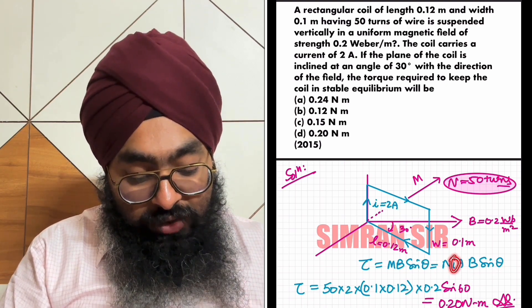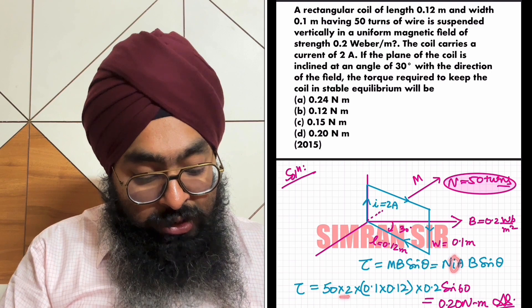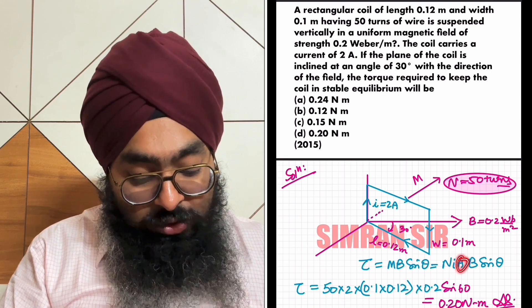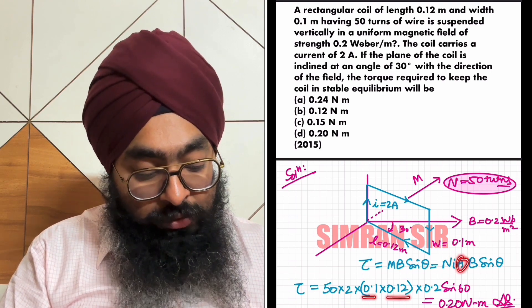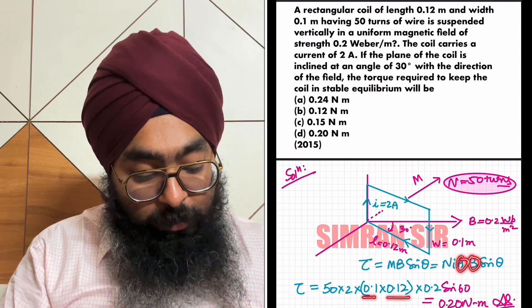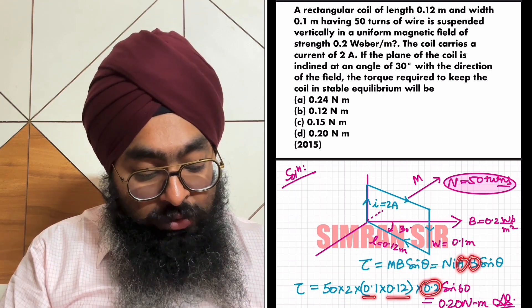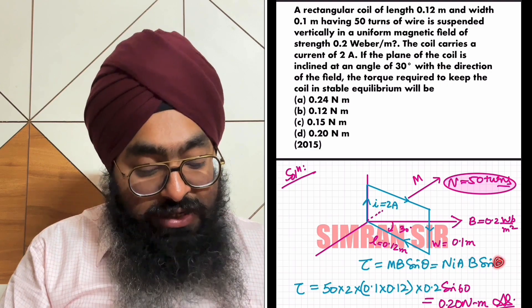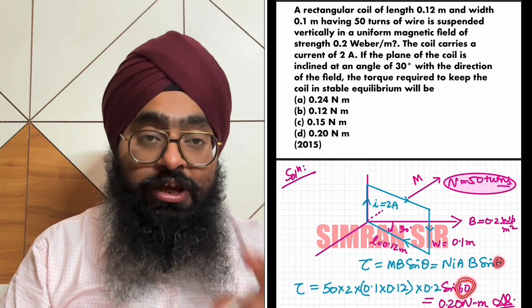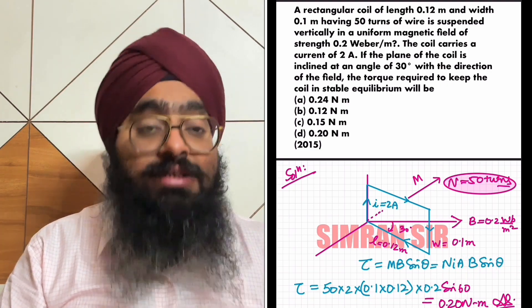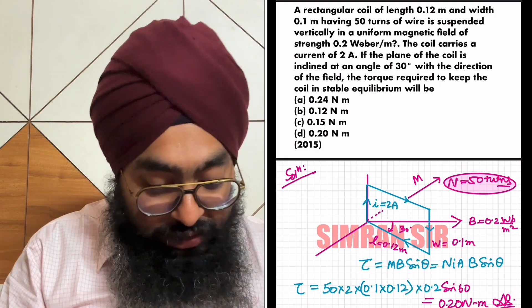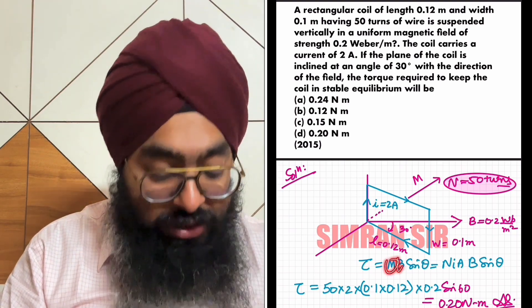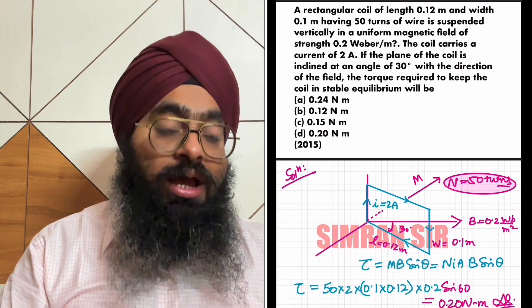Current value is 2 ampere, area will be 0.1 into 0.12, B's value is 0.2, and in place of theta will come 60 degrees. This is important — theta is the angle between M and B.